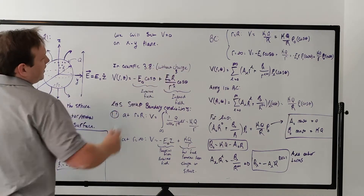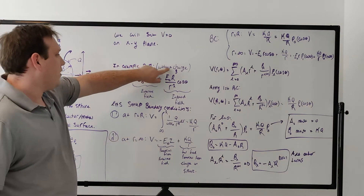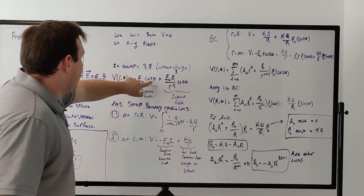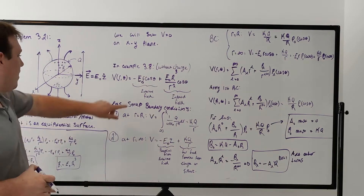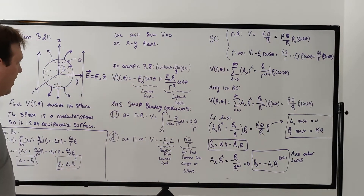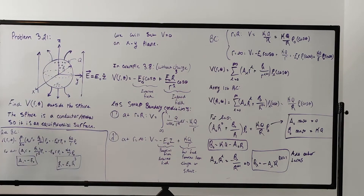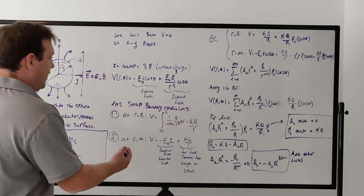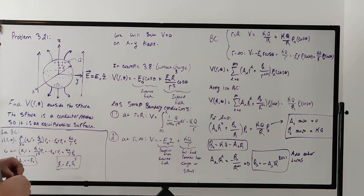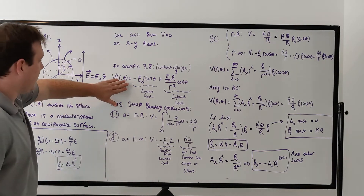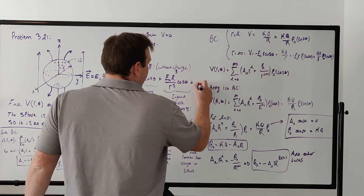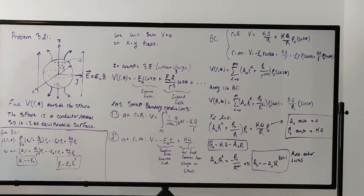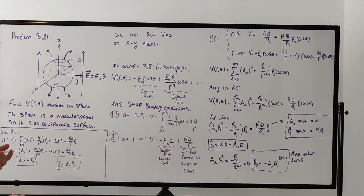Looking at problem 3.8, the potential Griffiths derives for an uncharged sphere is −E₀r cosθ (from the external field) plus a term from the induced field. Since r cosθ is just z, this can also be written as −E₀z. This is the potential without charge, and we can guess there will be some additional term to add because now we have charge on the sphere. Let's derive this from first principles by setting up boundary conditions and using Laplace's equation.